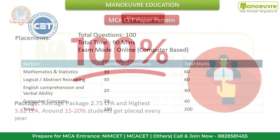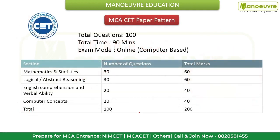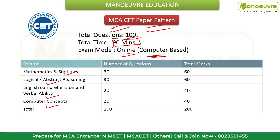As discussed earlier, admissions are conducted through CET — you will have to crack the Maharashtra MCA CET entrance exam. The paper pattern is: total 100 questions, total time 90 minutes, exam mode is online computer-based test, with four sections: Mathematics and Statistics, Logical and Abstract Reasoning, English Comprehension and Verbal Ability, and Computer Concepts.